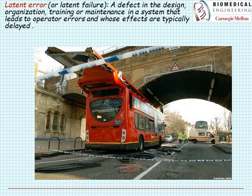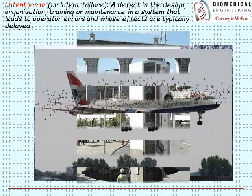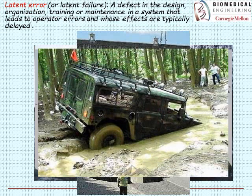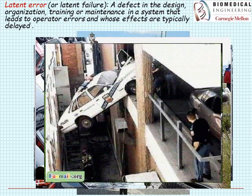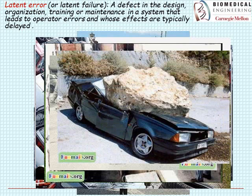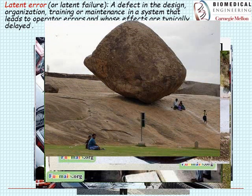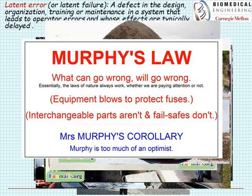Here's a small sampling of operator errors — puddles deeper than expected, an embarrassing oops moment, and what I call a disaster waiting to happen. This leads to Murphy's Law: what can go wrong will go wrong. The laws of nature are always in motion. Equipment blows to protect fuses. Interchangeable parts aren't. Fail-safes don't. As Murphy's Corollary goes, Murphy was too much of an optimist.